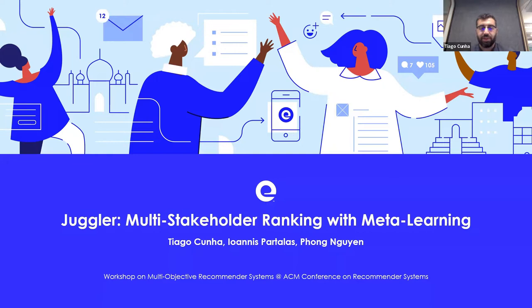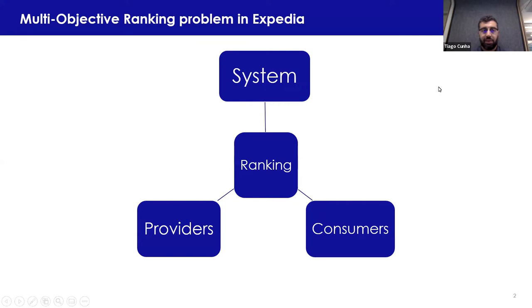Hello, I'm Diego. I'm here to present our work: Juggler, multi-stakeholder ranking with meta-learning. This work has been done with Joannis and Fong at Expedia. The ranking we produce for hotels needs to take into account objectives from three groups of stakeholders: the providers, which are the hotels; consumers, which are the customers; and the system, which is the marketplace itself.